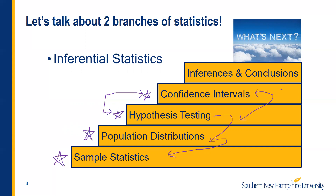Because our end goal here is to be able to make inferences and conclusions. We want to know if we have evidence of a change, if we have evidence that something is different, and what the averages are for our populations across all sorts of different types of examples and data. We're learning all of this information so that we can use it to speak about a group of data — a sample or a population — and all of it builds like a staircase.